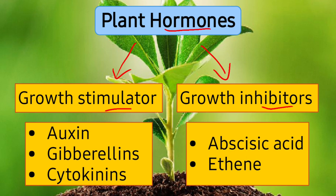Growth stimulators are hormones that increase growth in plants. Important examples are auxins, gibberellins, and cytokinins. On the other hand, growth inhibitors are plant hormones that stop growth in plants, and common examples are abscisic acid and ethene.